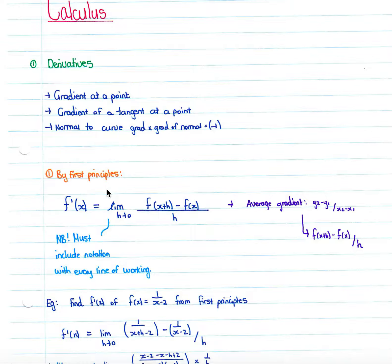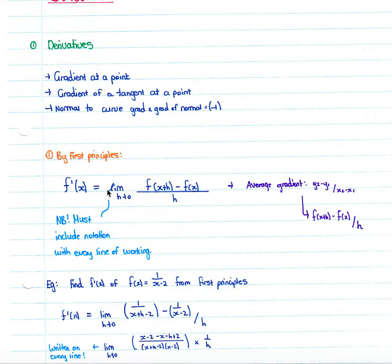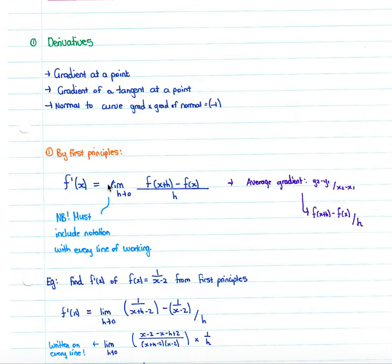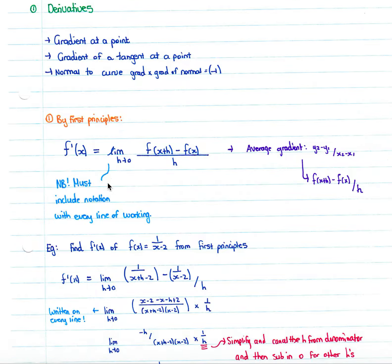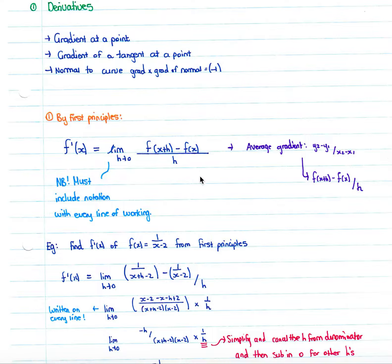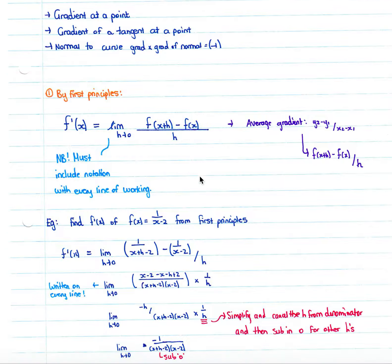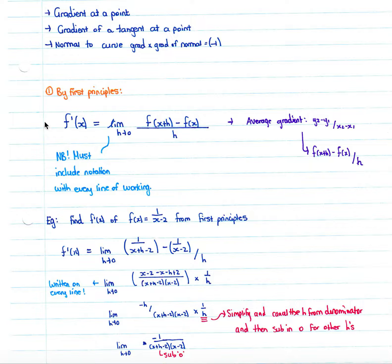In many cases, they will ask you to find your derivative using first principles, which is probably the most complicated way of finding your derivative. If asked to do it specifically by first principles, you cannot use the quick rule. You will be given this formula on your formula sheet: f'(x) equals the limit as h tends to zero of f(x+h) minus f(x) over h.